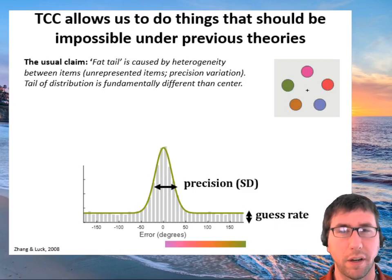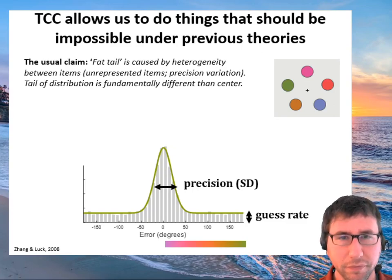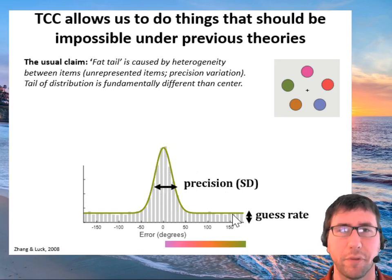The poster concentrates on one study that really shows something strong about this model, which is that TCC lets us make predictions that should be impossible under previous theories. That's because all previous theories agree that this long fat tail is caused by heterogeneity between items. That is, some items are contributing to this tail and others are contributing to the center of the distribution. Maybe these are unrepresented items or extremely low precision items. But the claim is that the tail is fundamentally different than the center of the distribution.